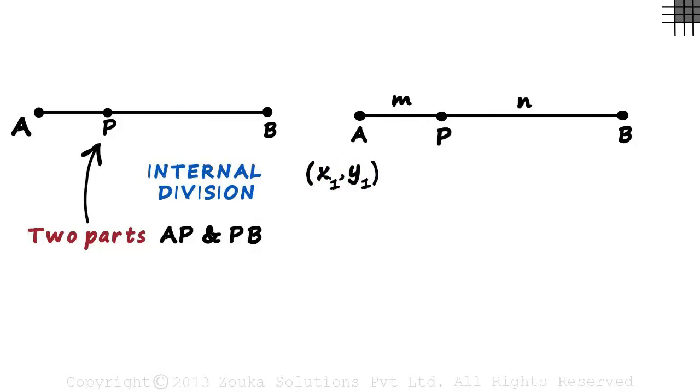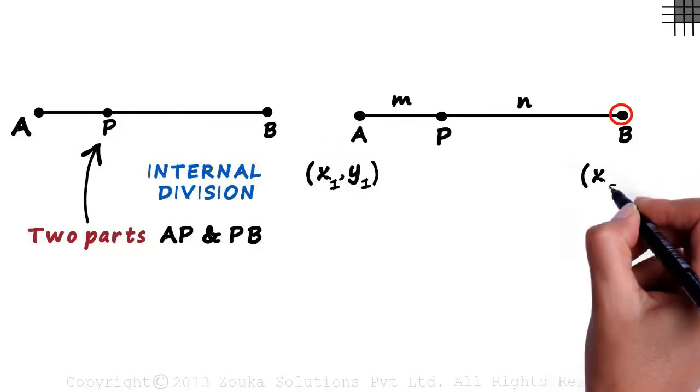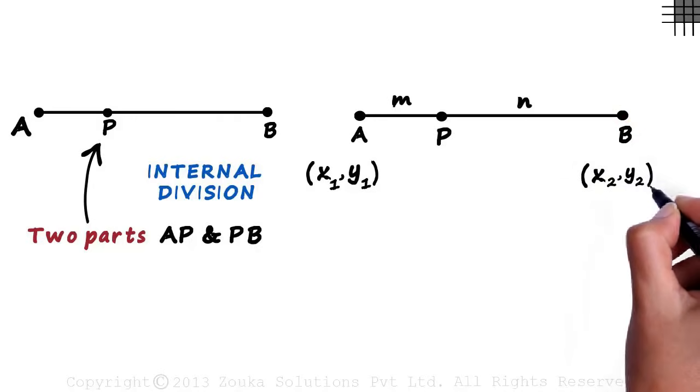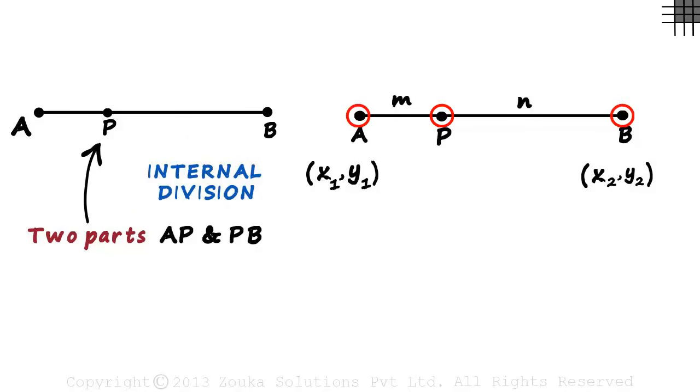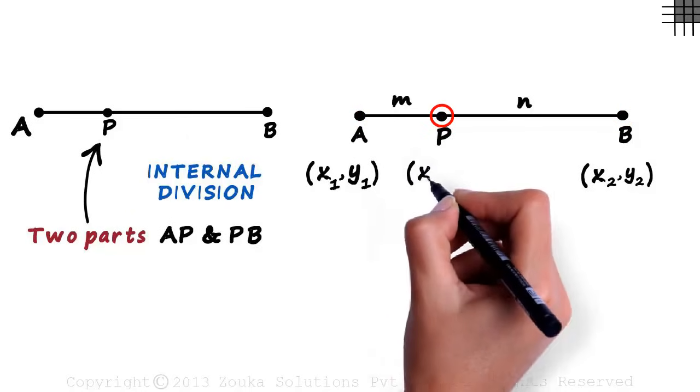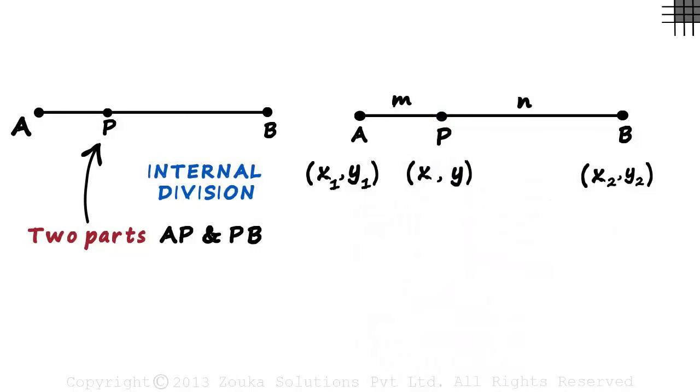And assume point B has coordinates x2 comma y2. What we would be really interested in is the coordinates of point P given the coordinates of these two points. Let the coordinates of point P be x comma y. We have the coordinates of points A and B and we have the ratio in which the point P divides the line segment AB.